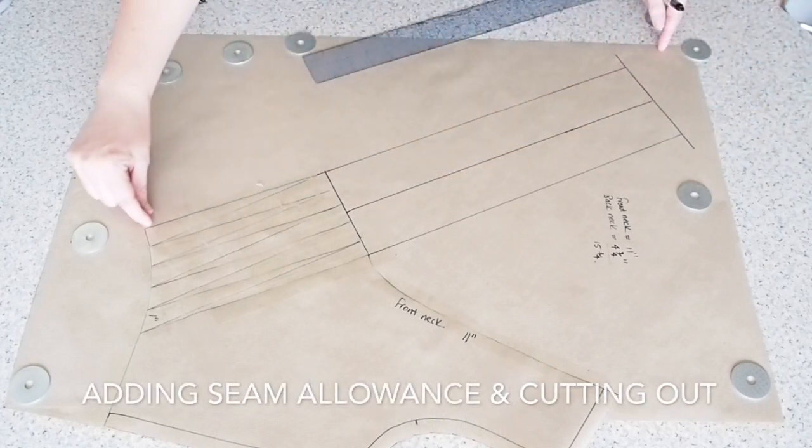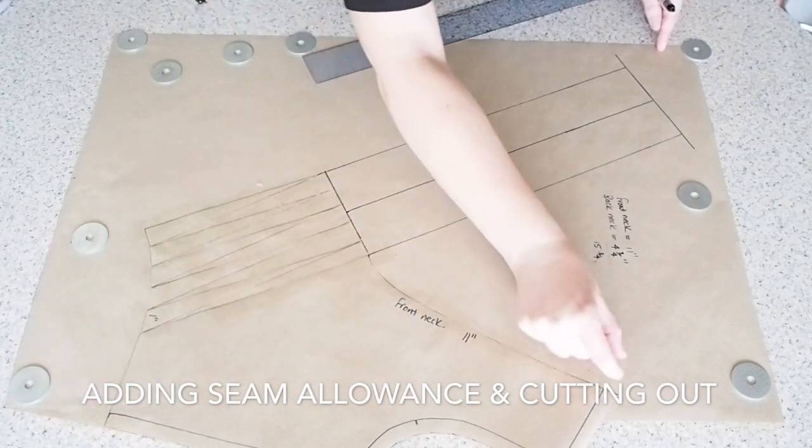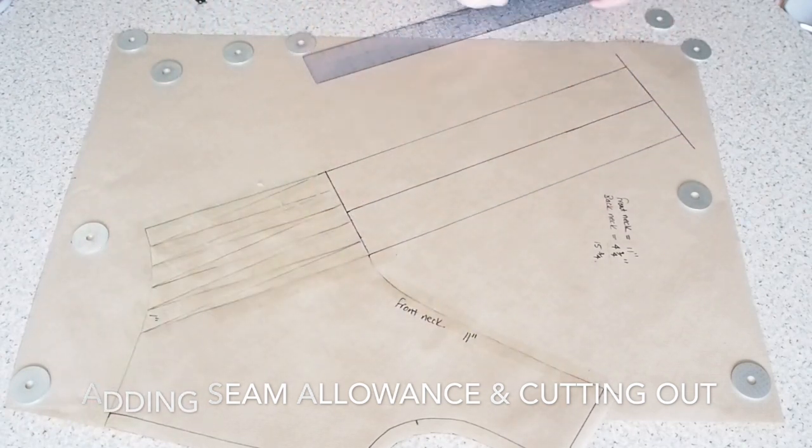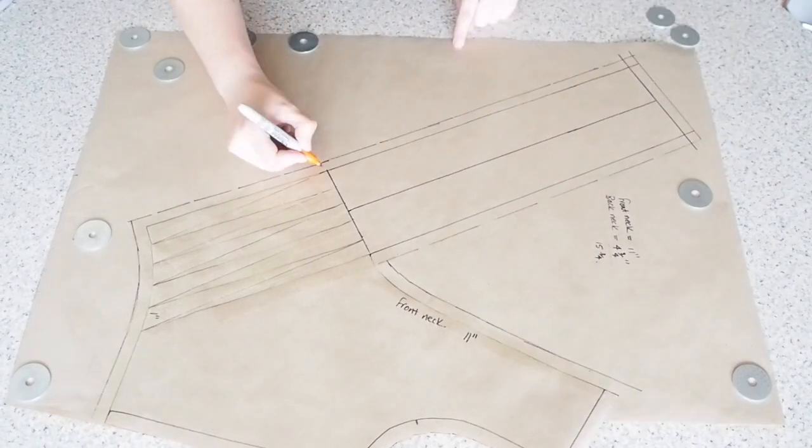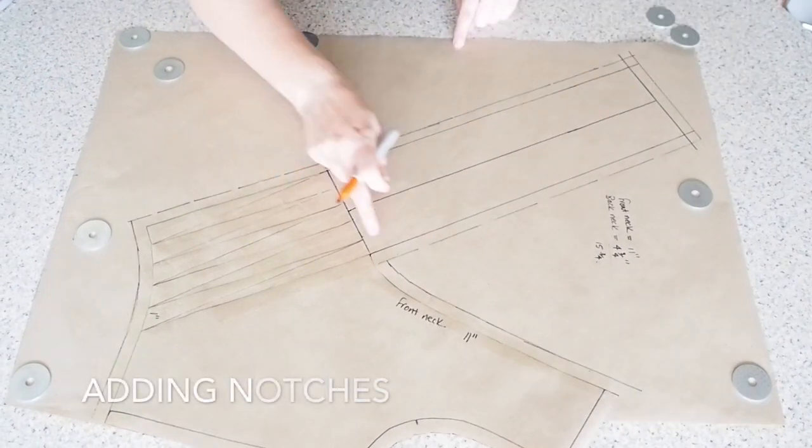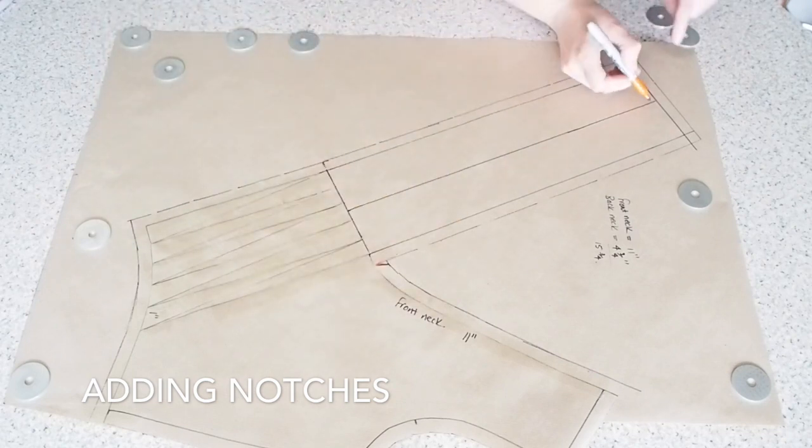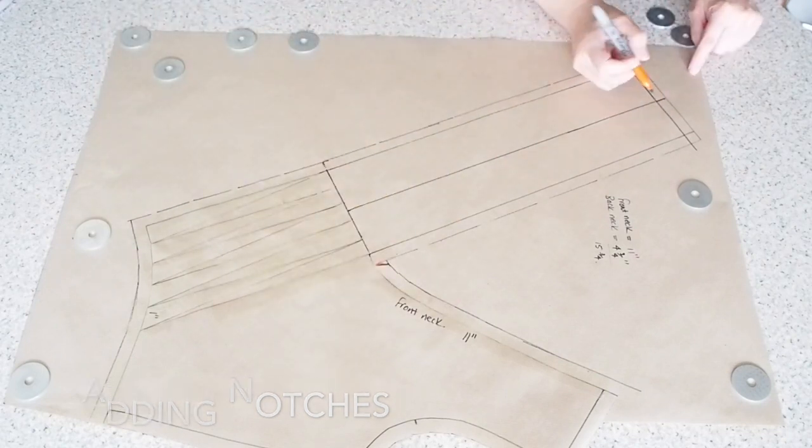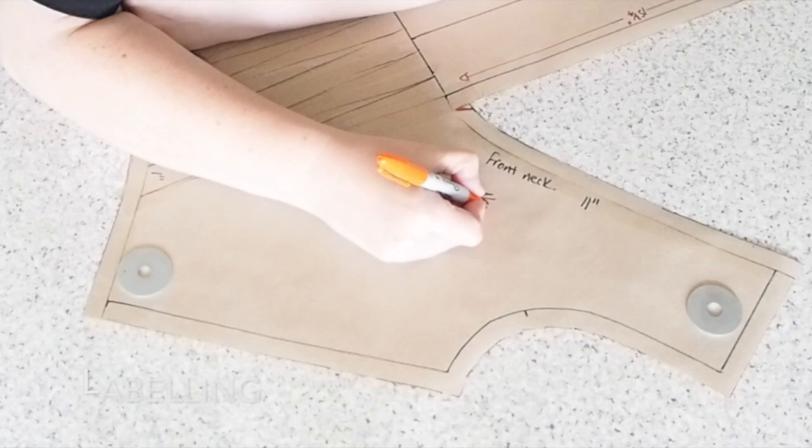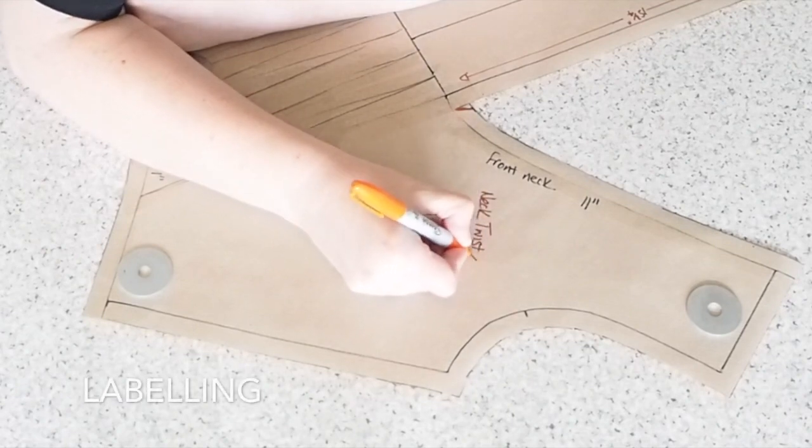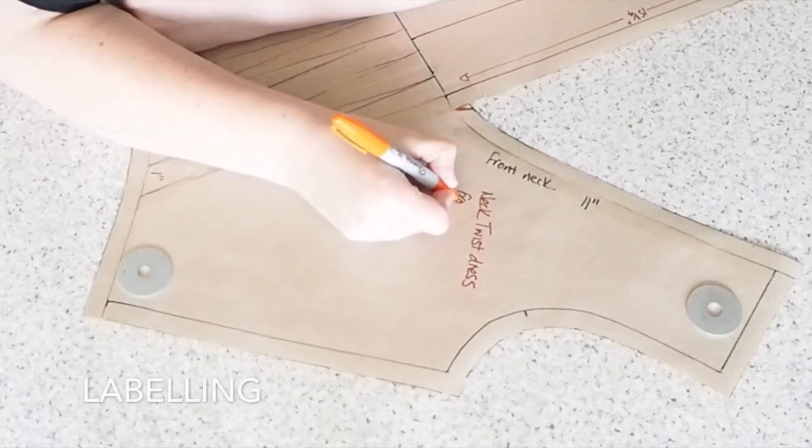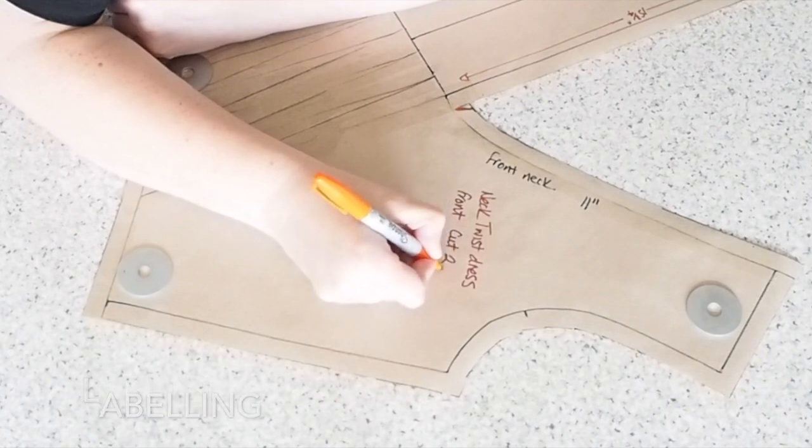Just to add seam allowance, just where you see me indicate here. So that's my seam allowance all in place. And now just marking in some notches. This will help me out when I come to sew. And labeling. So I'm going to cut two pieces.